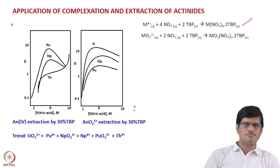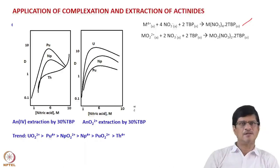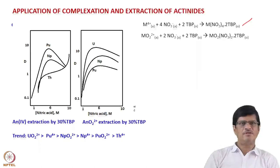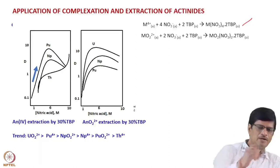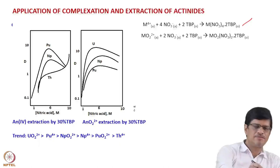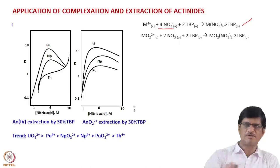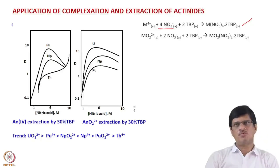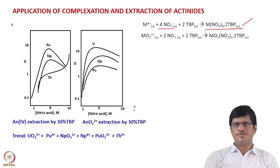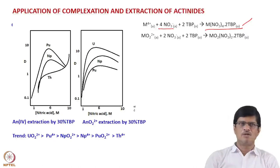The left side profile shows the tetravalent actinide ions. The extraction of plutonium(IV) increases with increasing nitric acid concentration, going up, and beyond around 6 molar nitric acid it then falls. As mentioned in the extraction equilibrium, with increasing nitric acid concentration the nitrate ion concentration increases, promoting formation of M(NO3)4·2TBP, so extraction should increase with increasing nitric acid molarity.